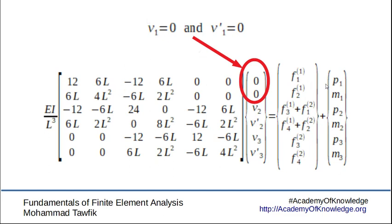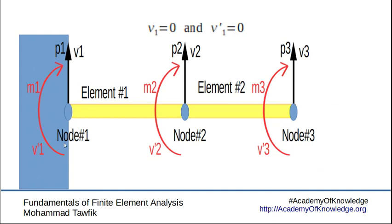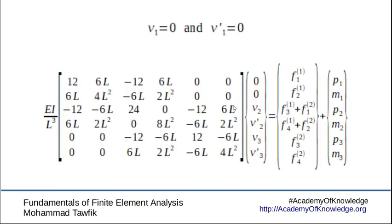On the other hand we have p1 and m1 here. Let's recall it from the sketch. p1 and m1 is the lateral force and the moment at node one. These are the reactions of the support. I don't know the reactions of the support. This is part of the solution or actually what we will call later the secondary part.